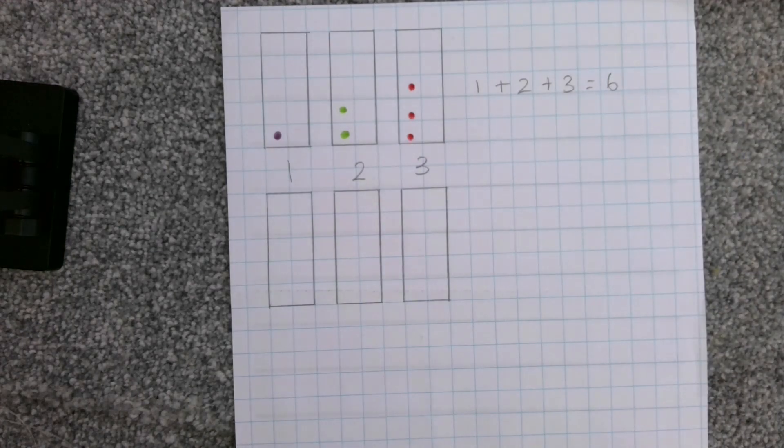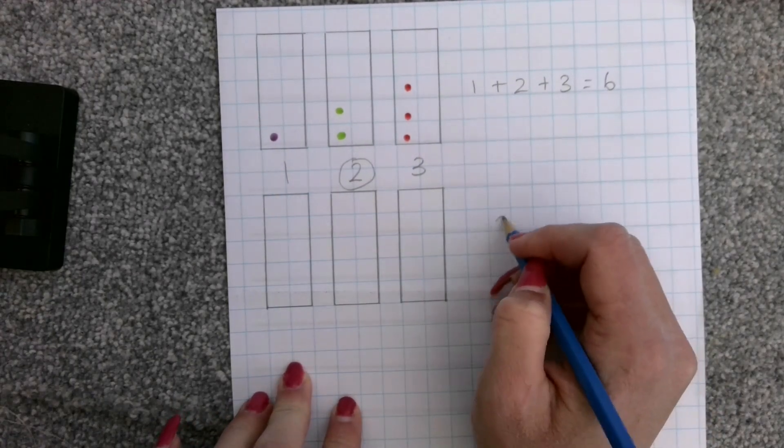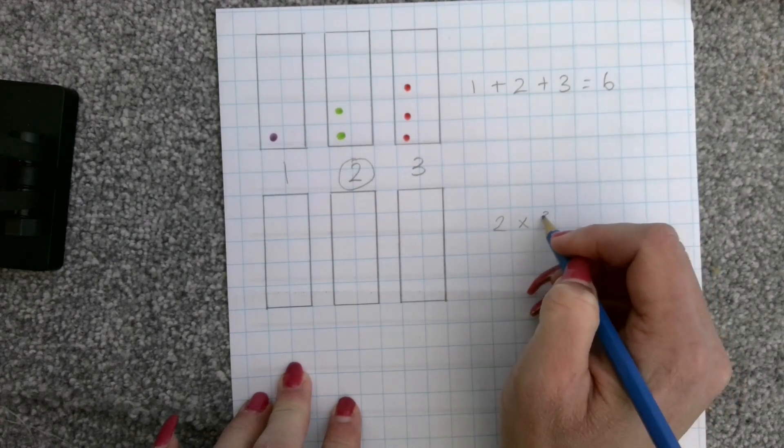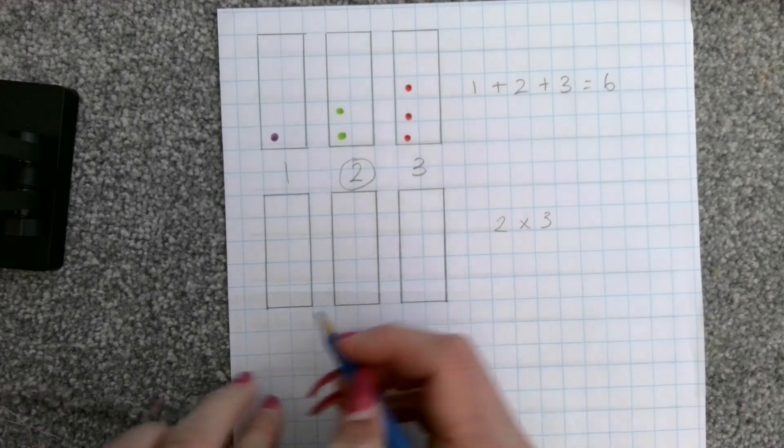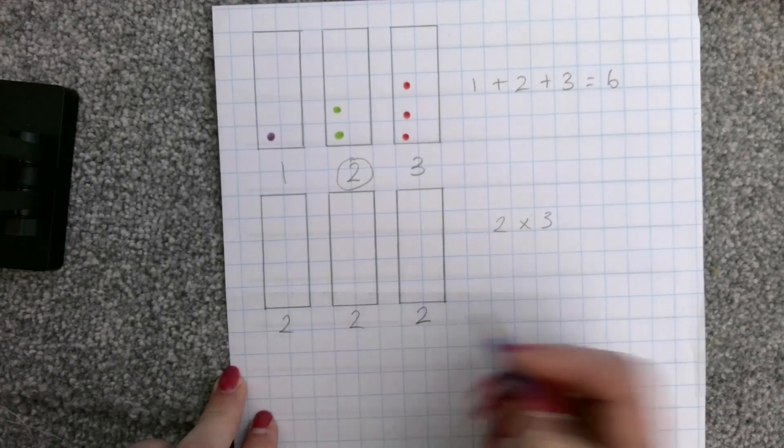Now, I need to take my middle number, which is my two, and times it by three. That means I've got two three times. So, there will be two in here, two in here, and two in here.